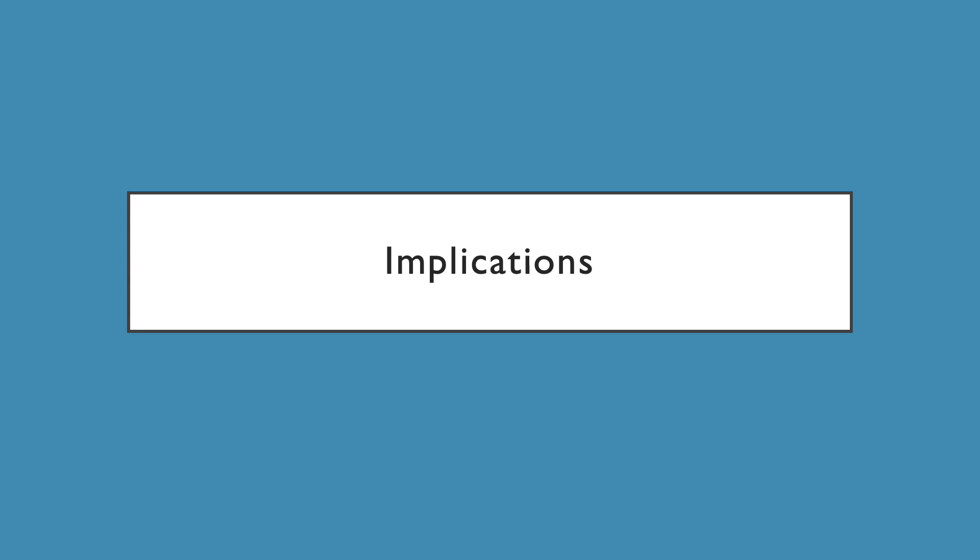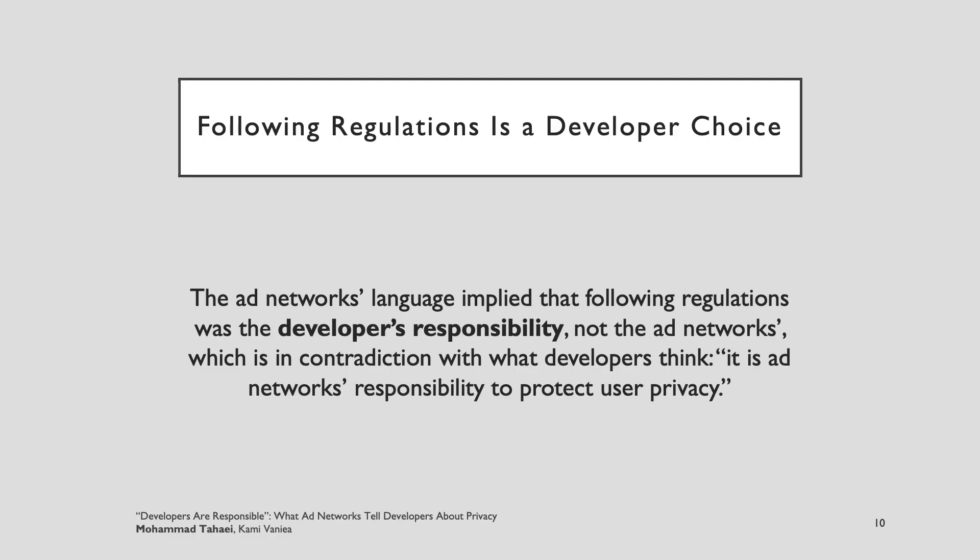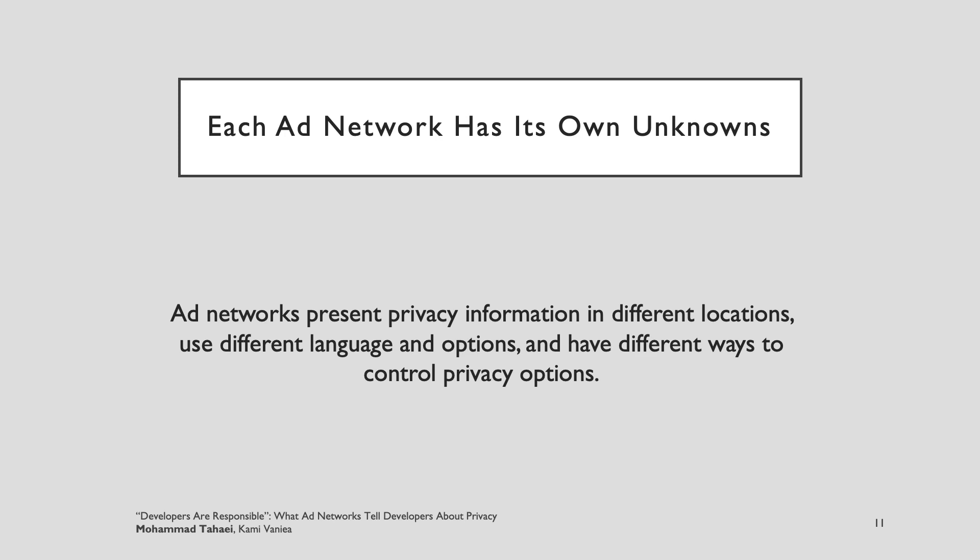What are some of the implications of our work? First, we observe that ad networks clearly state in their policies and terms of use that it is developers' responsibility to adhere to regulations and laws and to protect user privacy — which is in contrast to what developers think, that it is the ad networks' responsibility to follow regulations. We also find that ad networks present privacy information in an inconsistent way, using different locations, different language, and various options, which might make it difficult for some developers to control privacy in their apps.